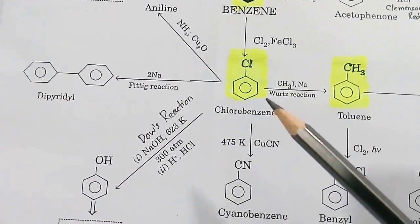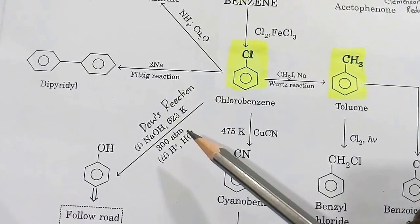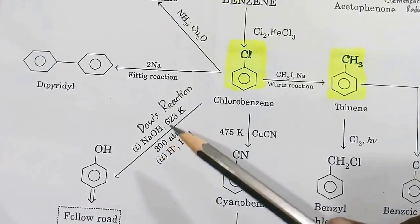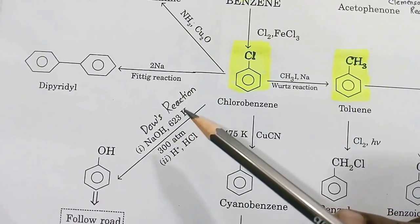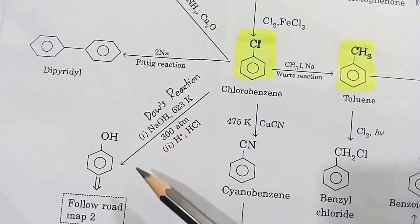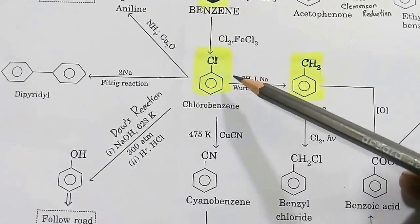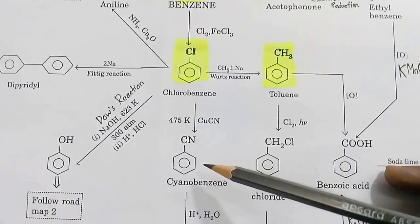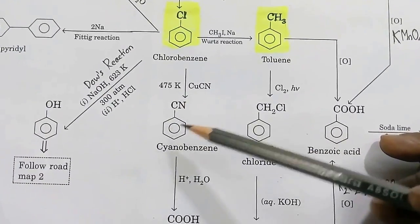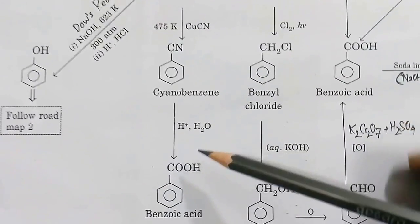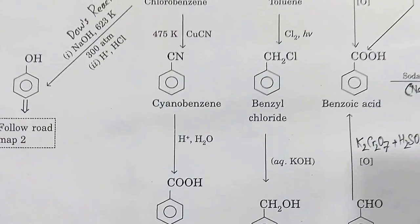Chlorobenzene at about 300 atm pressure with NaOH at 623 K first changes to a salt and then phenol is obtained — this is Dow's reaction. Chlorobenzene can also be converted to cyanobenzene using CuCN, and the cyanide group by acidic hydrolysis changes the CN group to COOH, giving the compound benzoic acid.